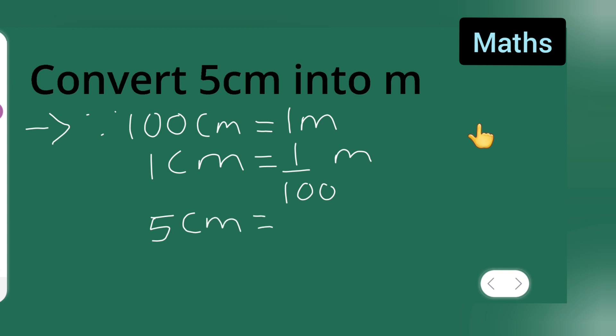Now what I'll have to do is 5 centimeter is equal to 5 into 1 upon 100 meter, right? Now here what you're going to get is this will be equal to 5 upon 100 meter.